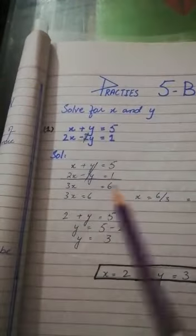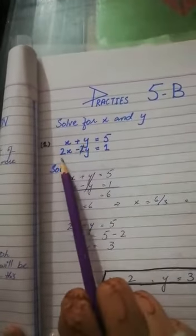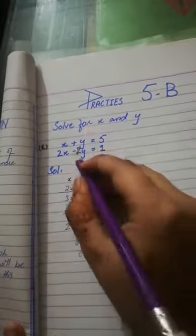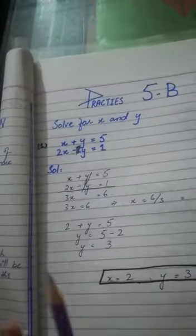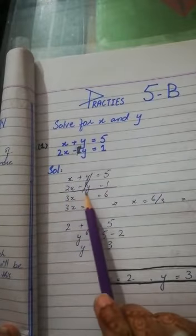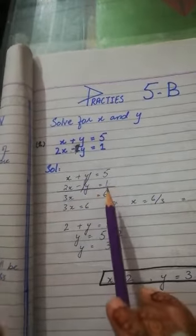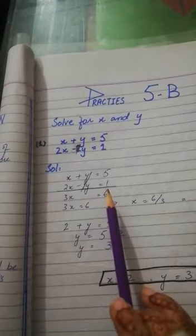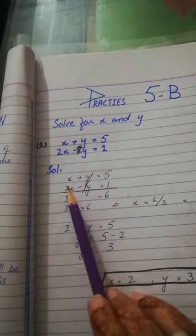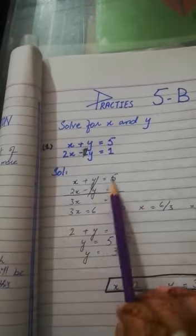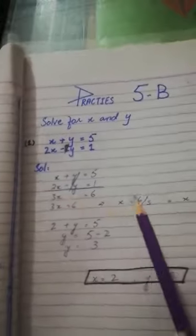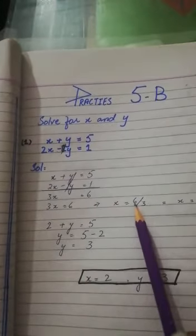So x plus y is equal to 5 and 2x minus y is equal to 1. We add these two equations. The signs are minus and plus. So this gives 3x, and 5 plus 1 is 6. So 3x is equal to 6, and x is equal to 2.